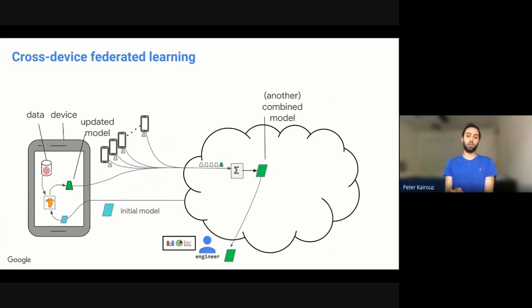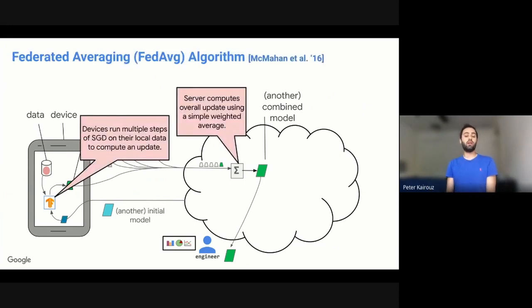This is shown as the cyan parallelogram on this slide. This is sent to the device by the service provider. The device uses its local data to update the model via some computation. And then we get that green update, which is sent back to the server. The server receives all the updates, aggregates them to get a newer model. And then we can compute metrics on this new model. If we like the metrics, we stop the process. If we don't, we repeat the process over and over. Now, this is very general.